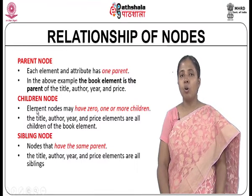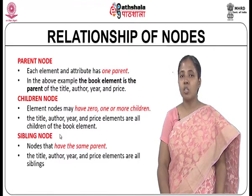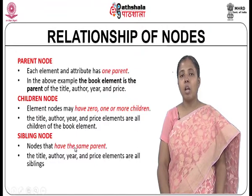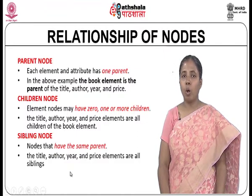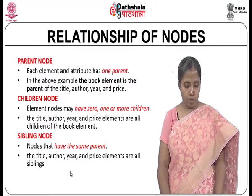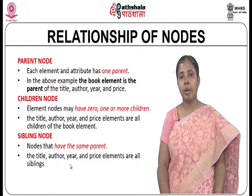Element nodes may have 0, 1, or more children. Title, author, year, and price elements are all children of the book element. Sibling nodes are nodes that have the same parent, so title, author, year, and price elements are all siblings to one another. This is how in an XML document the structural relationship between nodes is maintained, and the same structural relationship is also used by XPath technology.